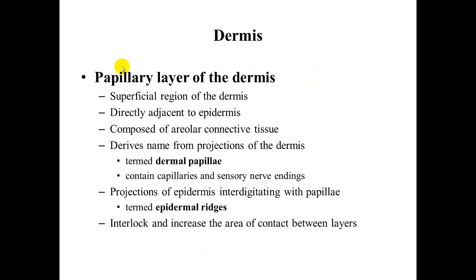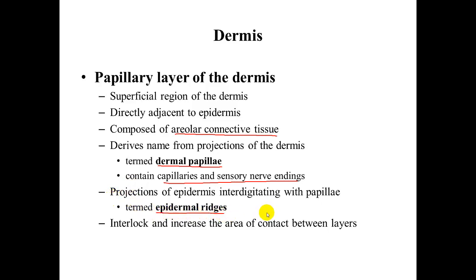The papillary layer is the superficial region, closest to the surface of the skin and directly adjacent to the epidermis. It is composed of areolar connective tissue, which is a loose connective tissue. It has dermal papillae that contain the capillaries and sensory nerve endings. You also have epidermal ridges, which are projections of the epidermis arising from the papillae themselves. The papillary layer and the epidermal ridges help to interlock and increase the area of contact between layers.